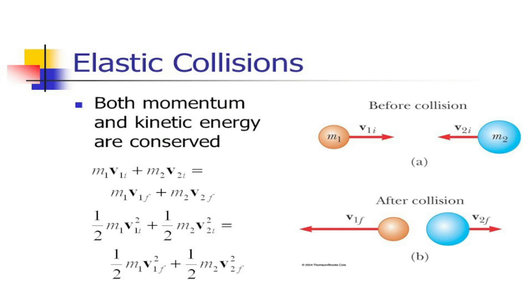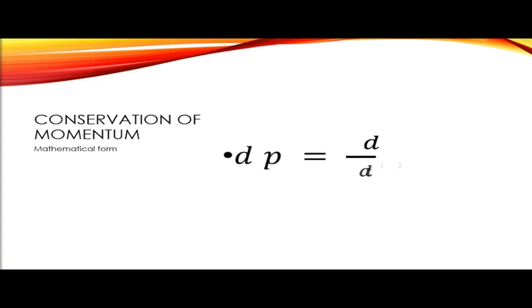We can write this law mathematically using differential calculus. We can assert that the change in momentum p, or delta p, is equivalent to the derivative of mass times velocity over delta t, which is equivalent to zero.